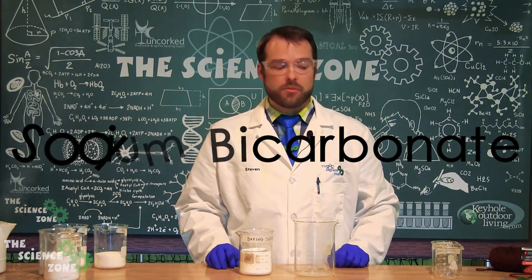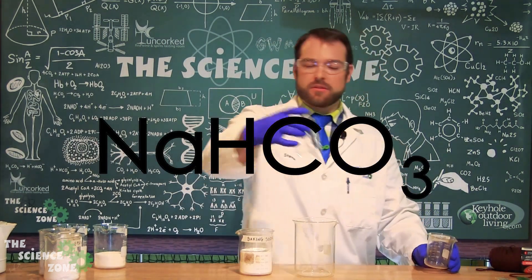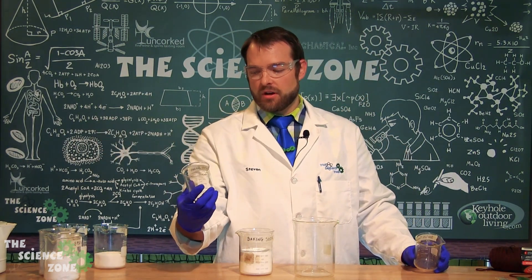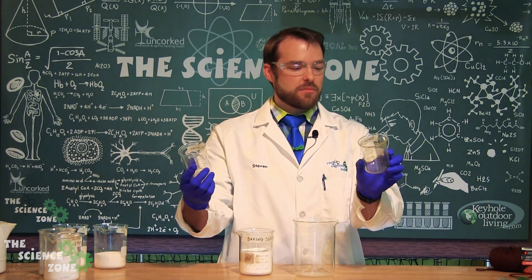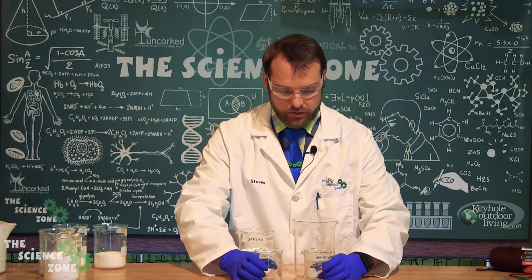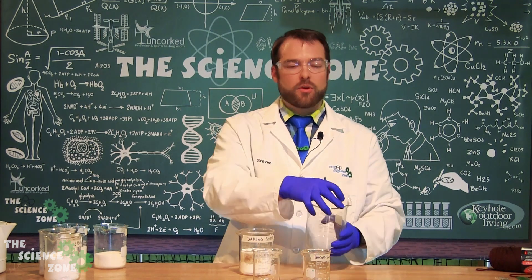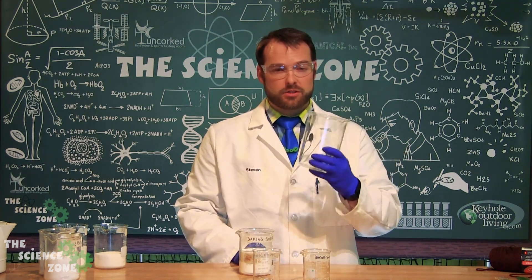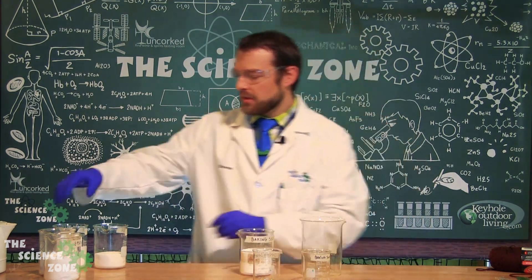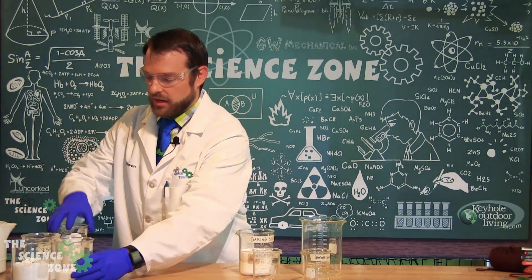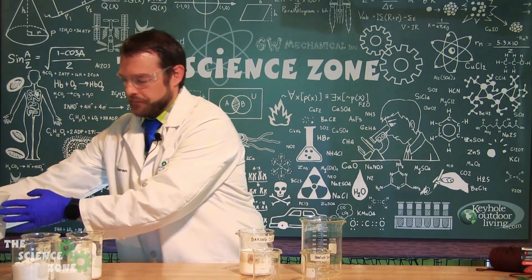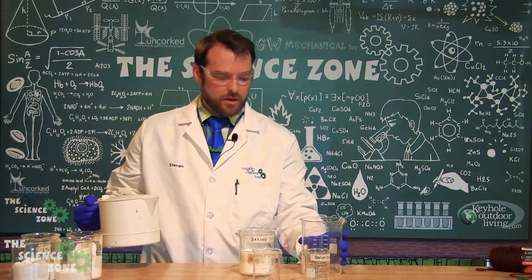And because my beakers over here are about 250 milliliters, I am going to be making sure that I have about 400 milliliters of a supersaturated solution. So first step is to take our boiling water and pour it into our beaker.